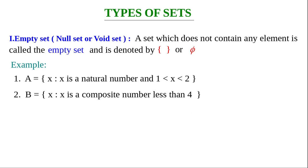Another example: B equals the set of all x such that x is a composite number less than 4. The natural numbers less than 4 are 1, 2, and 3. Neither of them is composite — 1 is neither composite nor prime, and 2 and 3 are prime numbers. So there is no composite number less than 4, making B an empty set.